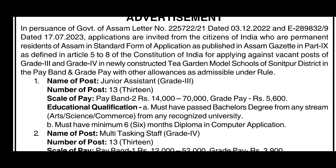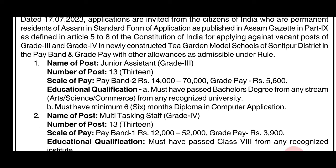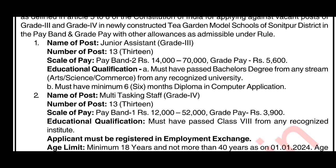The name of the Grade 3 post is Junior Assistant. The scale of pay is 14,000 to 70,000, with a grade pay of 5,600. The starting salary is around 32,000 to 35,000. The minimum qualification is a bachelor's degree in arts, science, or commerce, plus a minimum 6 months computer application diploma. The Grade 4 post is Multi-tasking Staff.